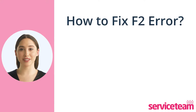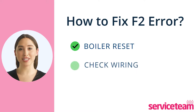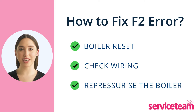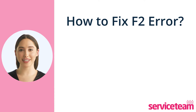Let's find out how to fix the F2 error code. Start by pressing the reset button under the boiler cover and wait for it to restart. If resetting doesn't work, check the wiring using a multimeter — make sure you know what you're doing with electricity. Low pressure might cause the error, so you need to repressurize the boiler; check your boiler manual to add more pressure if needed. Another way to fix the F2 fault is to thaw pipes, as freezing of the condensate pipe during cold weather can cause the system to fail.